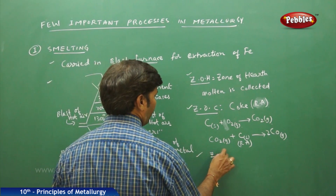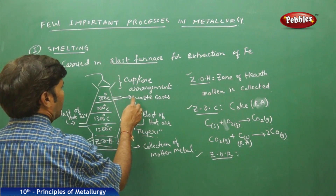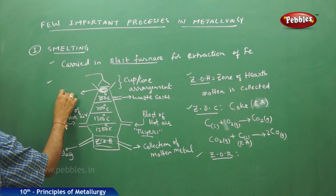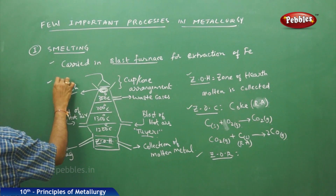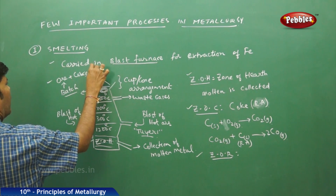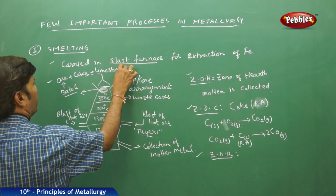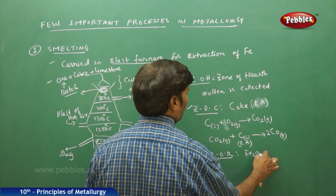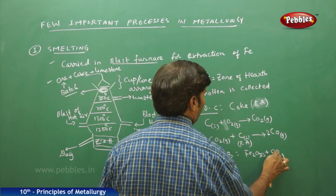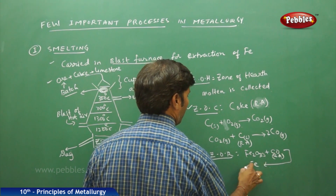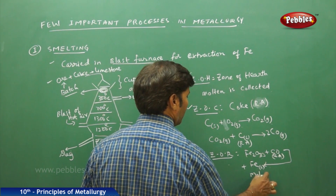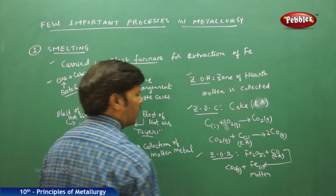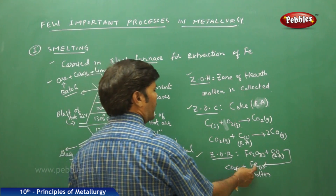In the Zone of Reduction (ZOR), the batch material fed through the cup-cone arrangement consists of ore plus coke plus limestone. Here, Fe₂O₃(s) reacts with carbon monoxide acting as a reducing agent to give iron and carbon dioxide as a byproduct: Fe₂O₃(s) + 3CO(g) → 2Fe + 3CO₂(g).